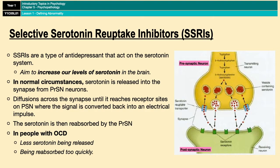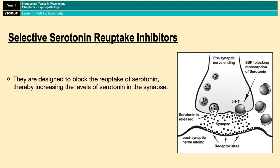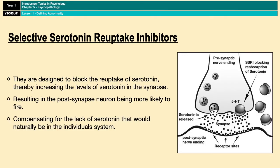Which is why you give somebody an SSRI. SSRIs are designed to block the reabsorption of serotonin, thereby increasing the levels of serotonin in the synapse. Whilst more and more serotonin is being released from the presynaptic neuron, less is being reabsorbed because the SSRI is blocking the reabsorption channel. That means that the lack of serotonin naturally in the individual's system is being compensated for. The increased levels of serotonin in the synapse also means it's more likely that serotonin will bind to the receptor sites on the postsynaptic neuron, which means the postsynaptic neuron is more likely to fire and the correct information about mood is more likely to be transmitted, thereby reducing the symptoms of OCD.